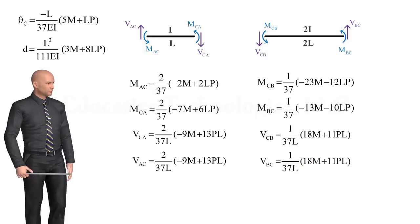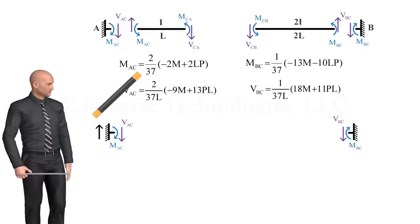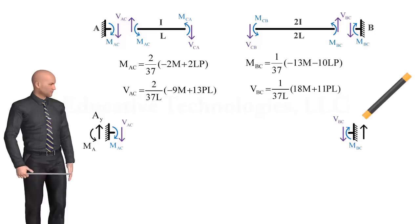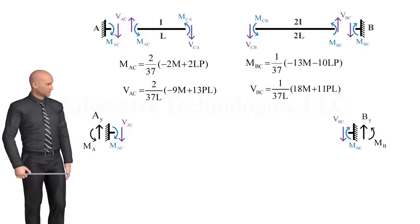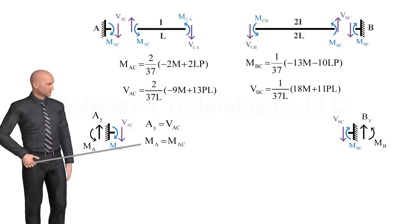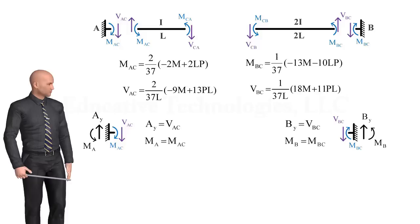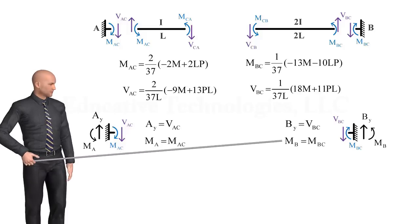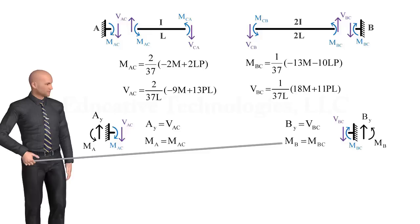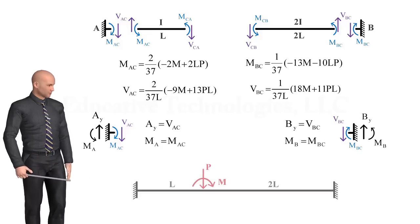At this point, determining the support reactions becomes a matter of transferring the member-end forces from segments AC and CB to the supports at A and B. That is, the shear force at the left support equals VAC, and the bending moment is MAC. At the right support, the shear force equals VBC, and the bending moment equals MBC. Here are the reaction forces drawn on the beam.